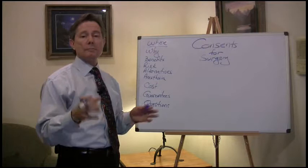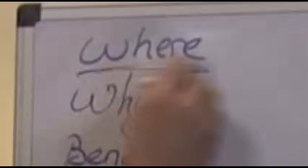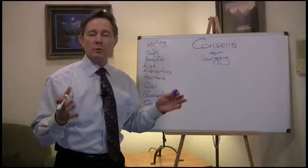All right, top of the list for your consent, the first thing should be: where are you having the surgery done? It's important because your surgeon may operate in a hospital, they may operate in a surgery center, or they may be doing the surgery in their office or in a large office setting. So it's important to know where your surgery is being done. The next thing is, why?